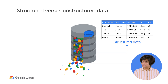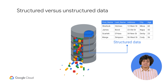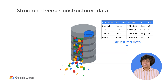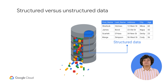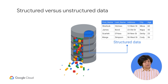Examples of structured data would include names, addresses, contact numbers, dates, and billing information. The benefit of structured data is that it can be understood by programming languages and data can be manipulated relatively quickly.